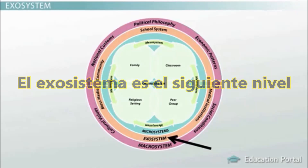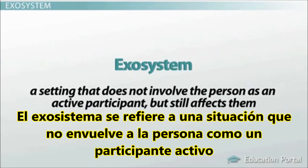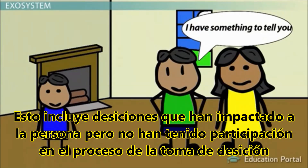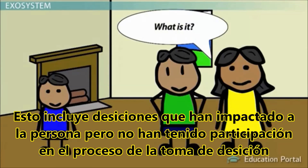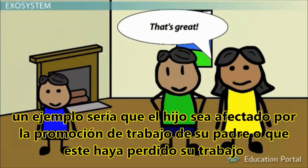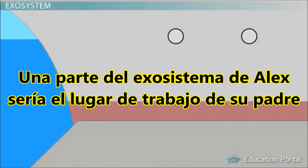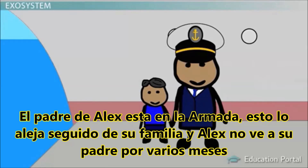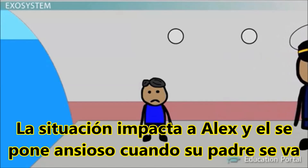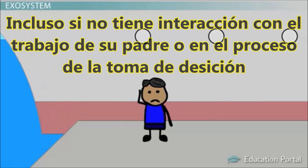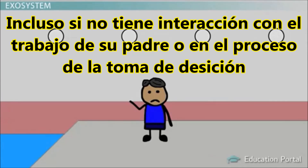The Exosystem is the next level we will examine. The Exosystem refers to a setting that does not involve the person as an active participant, but still affects them. This includes decisions that have bearing on the person but in which they have no participation in the decision-making process. An example would be a child being affected by a parent receiving a promotion at work or losing their job. One part of Alex's Exosystem would be his father's workplace — Alex's father is in the Navy, which often takes him away from the family, and Alex sometimes does not see his father for months at a time. This impacts Alex, causing him anxiety when his father leaves, which affects his development in other areas even though he has no interaction with his father's work.